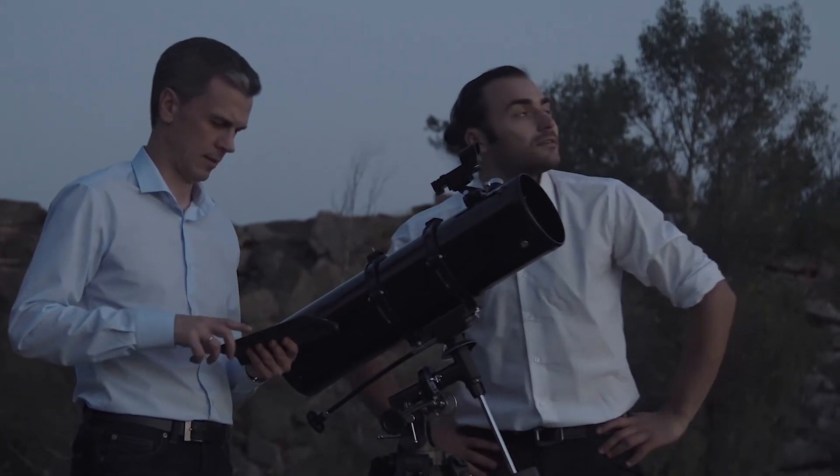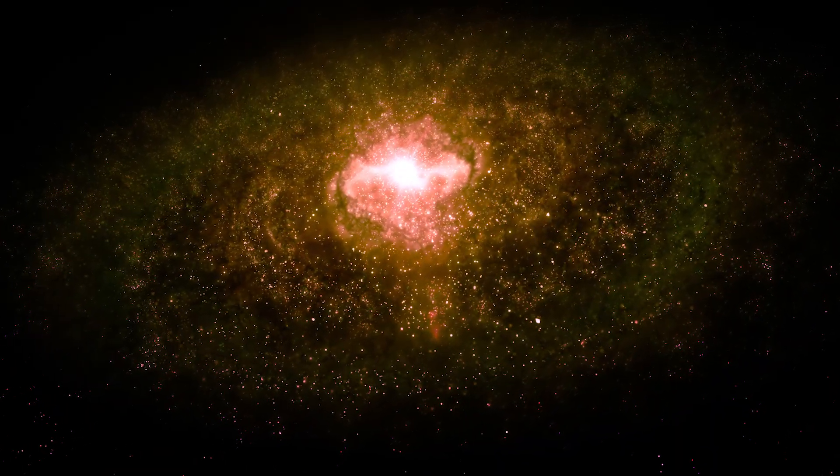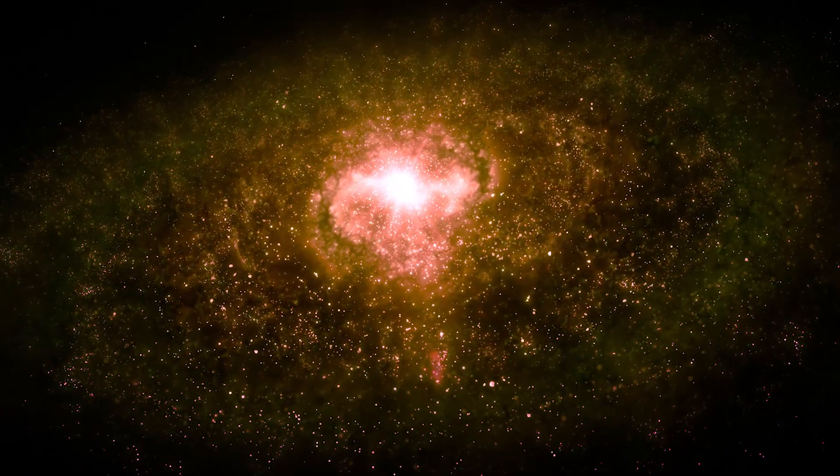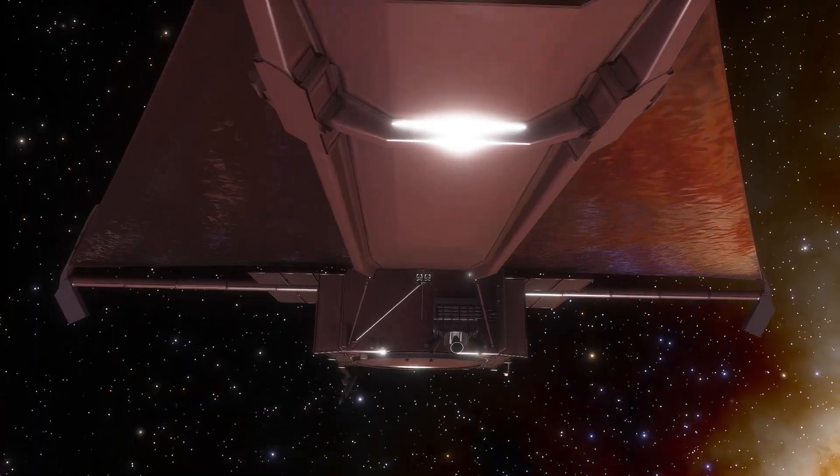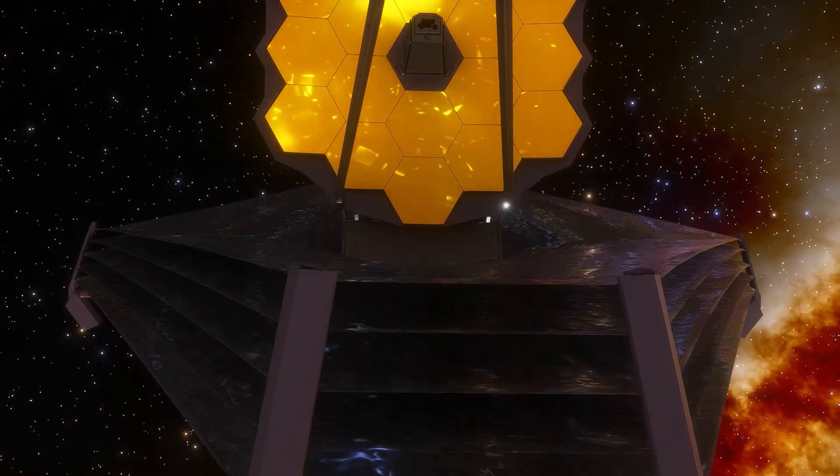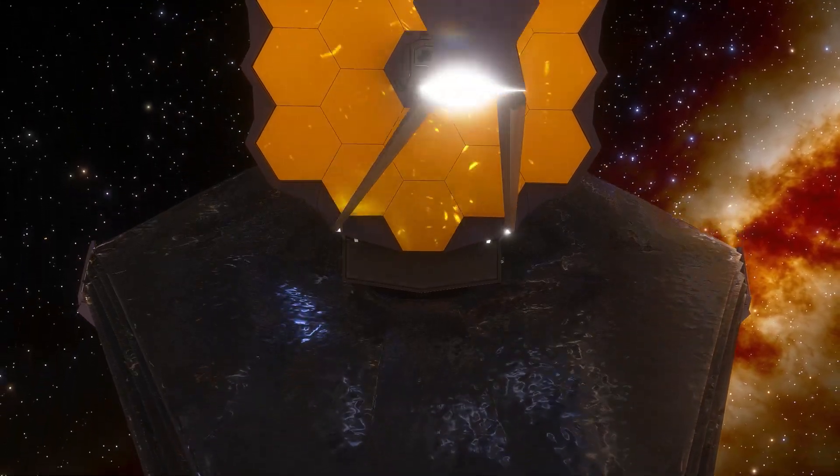Telescopes are like time machines. If an object is 10,000 light years away, that means light takes 10,000 years to reach Earth. So, the further out in space astronomers look, the further back in time we're looking.